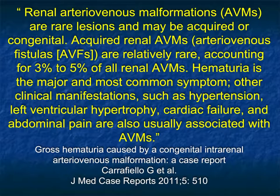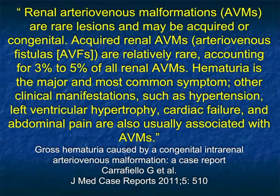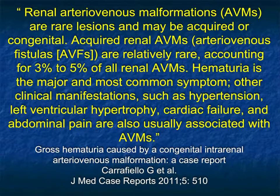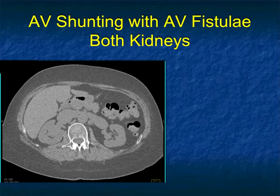This article by Cara Fellow is a case report. Renal AV malformations are rare lesions that may be acquired or congenital. Acquired are relatively rare, accounting for less than 5% of all renal AVMs. Hematuria is the major and most common symptom. Other clinical manifestations such as hypertension, cardiac failure, and abdominal pain can also be involved.